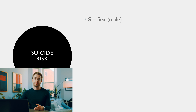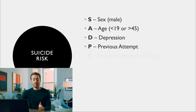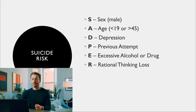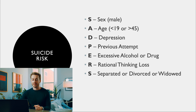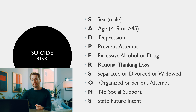The next mnemonic is around suicide risk: SAD PERSONS. S is sex — male, A is age — less than 19 or greater than 45, D is depression, P is previous attempt, E is excessive alcohol or drug use, R is rational thinking loss, S is separated/divorced/widowed, O is organized or serious attempt, N is no social support, and S is stated future attempt.